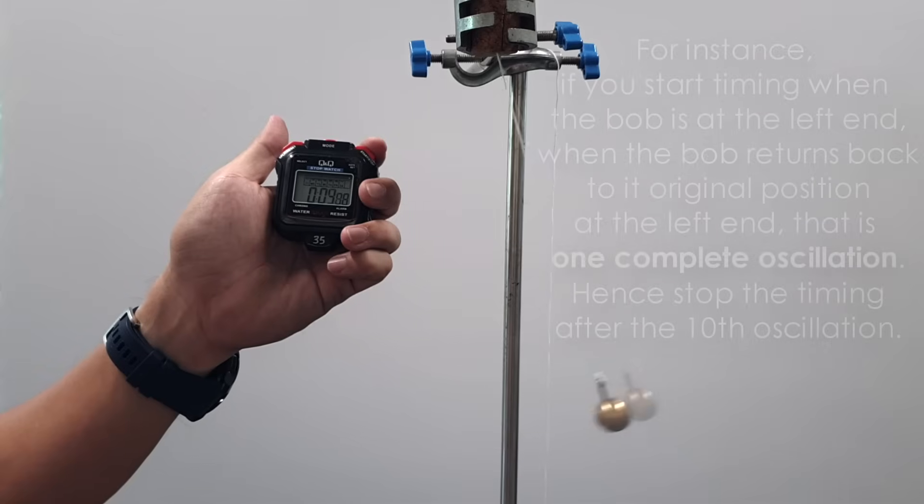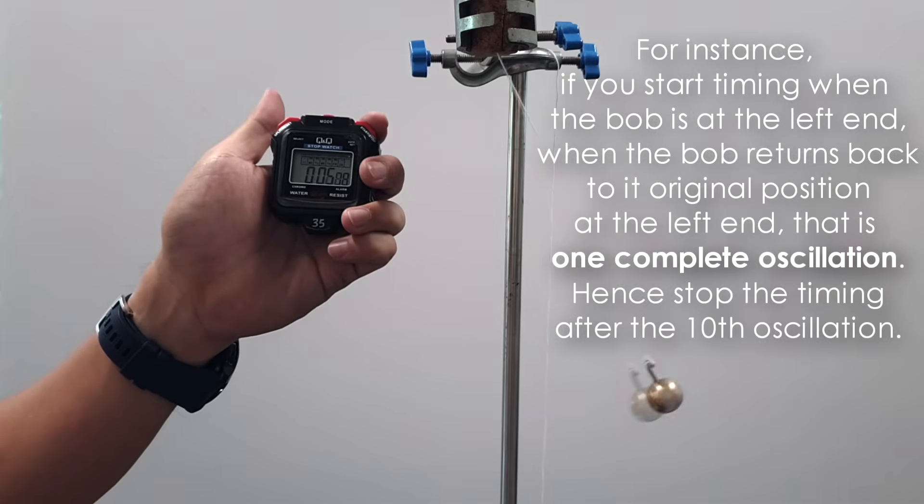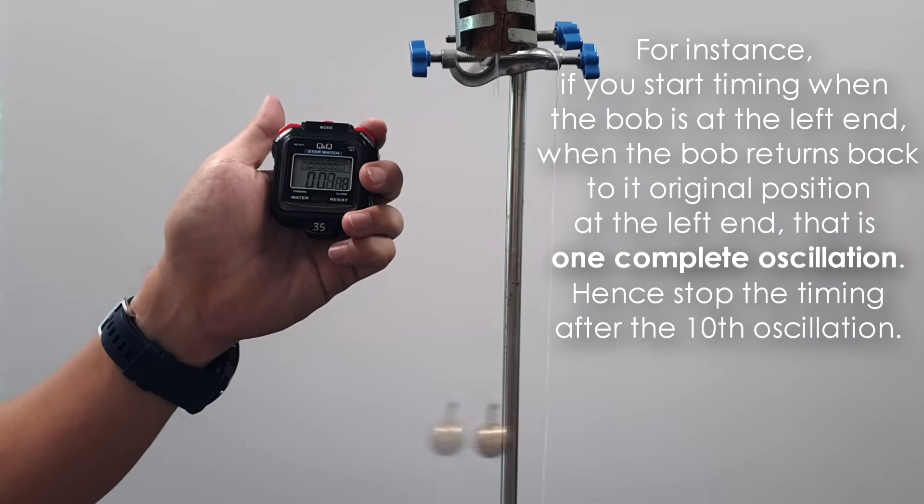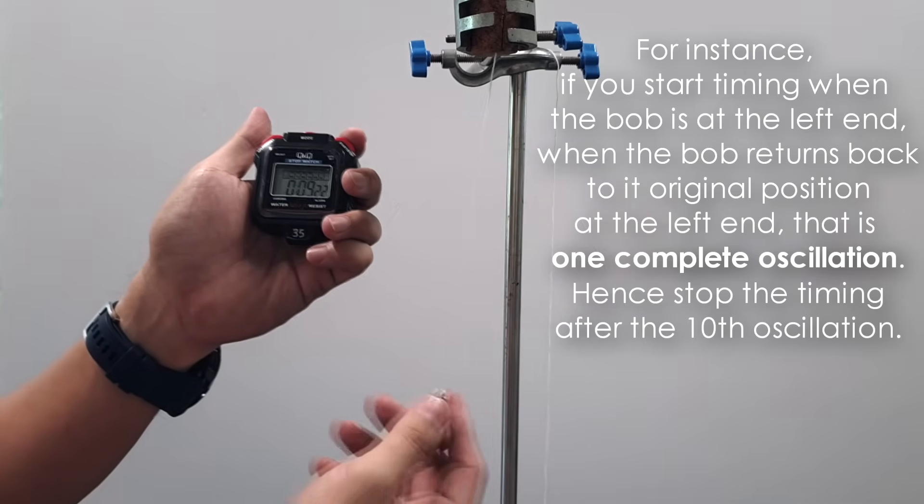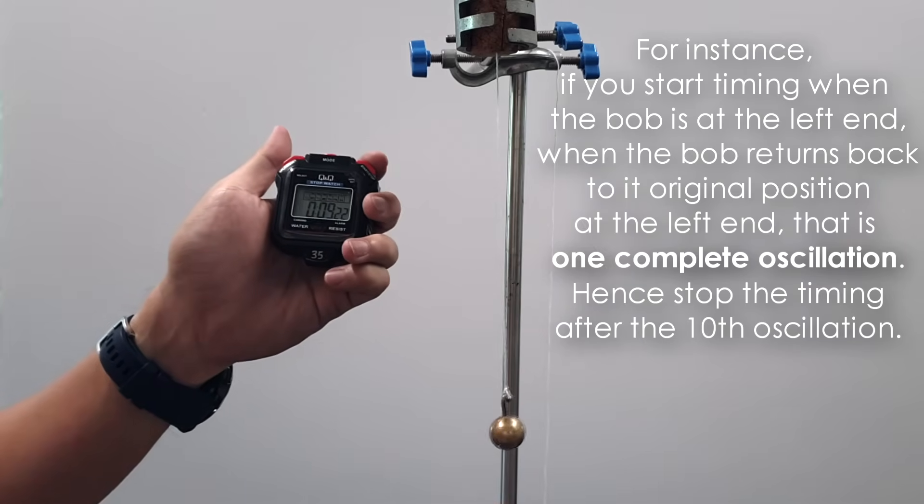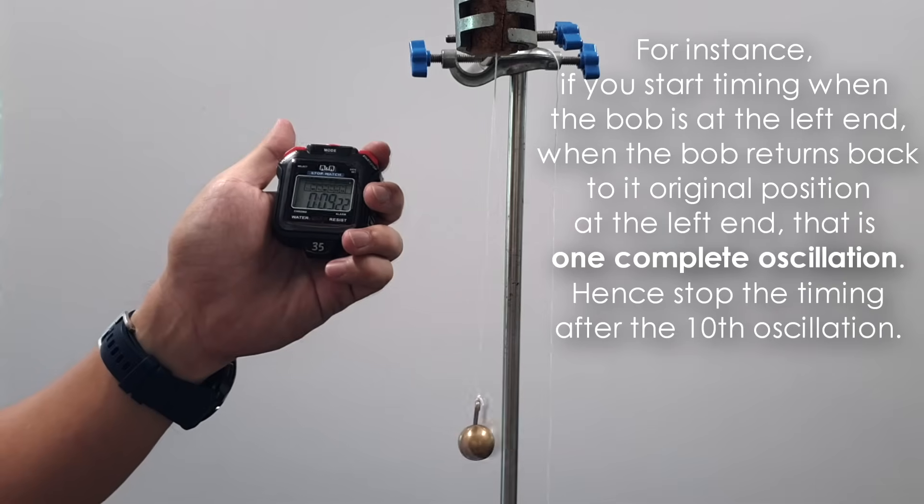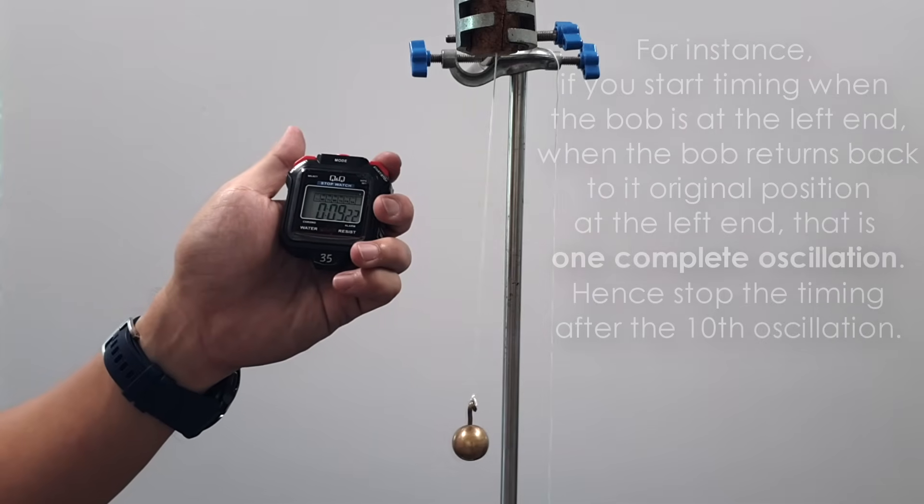Now, one, two, three, four, five, six, seven, eight, nine, and ten. So that will be the timing for 10 oscillations. Let it be t1. You can repeat the experiment again to find t2 for 10 oscillations, and then you take the average.